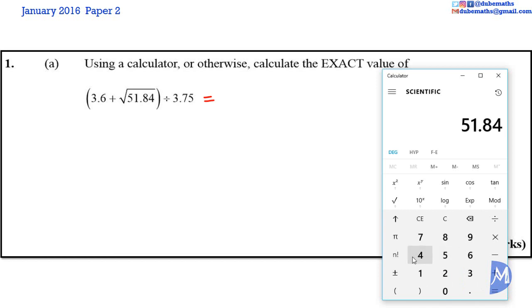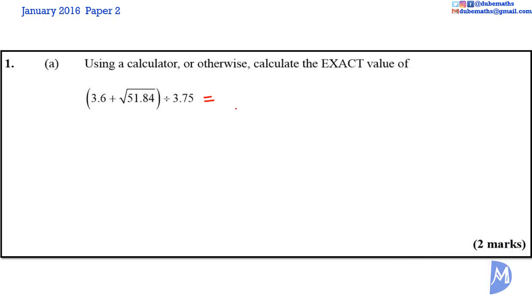51.84 square root 7.2. So we have 3.6 added to 7.2 divided by 3.75.